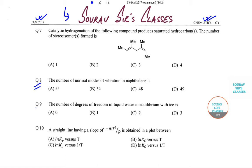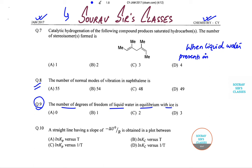The question says that the number of degrees of freedom of liquid water in equilibrium with ice is. We have four options. Now before going into that, let me give you a brief introduction on this concept. When liquid water is present in equilibrium with ice.